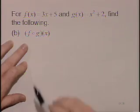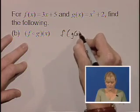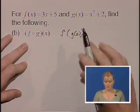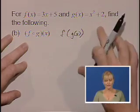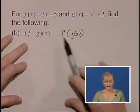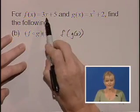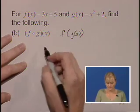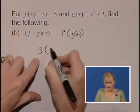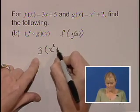Part B asks for F of G of X. So we can rewrite this as F of G of X. G of X is already in terms of the variable X, so we're ready to take the entire function G of X and substitute it into the function F. Wherever we see an X in the original F function, we're going to replace the entire G of X function. So we will have 3 — we're going to replace this entire function into the X position.